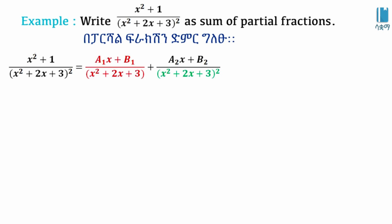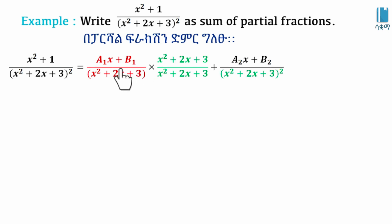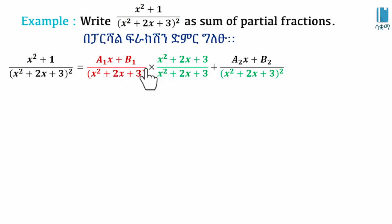If you have a rational expression, you can write it as a sum of partial fractions. We write A1x plus B1 over (x² + 2x + 3), plus A2x plus B2 over (x² + 2x + 3) squared. When you multiply through by the denominator (x² + 2x + 3) squared, you obtain an equation to match coefficients.